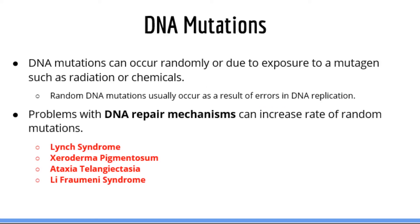So what causes DNA mutations? Well, DNA mutations can occur randomly or they can occur due to exposure to a mutagen such as radiation or certain chemicals. Random DNA mutations usually occur as a result of errors in DNA replication. Although various mechanisms exist to prevent this, including DNA polymerase proofreading and DNA repair mechanisms, random mutations do occur at a very low rate. Problems with DNA repair mechanisms can lead to various disorders which increase predisposition to cancer.